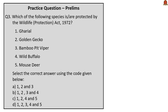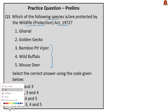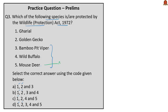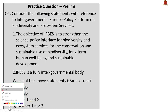Question 3: Which of the following species are protected by the Wildlife Protection Act of 1972? 1. Gharial 2. Golden Gecko 3. Bamboo Pit Viper 4. Wild Buffalo 5. Mouse Deer. Using the elimination technique: since 1 and 2 appear in all options, we need to check items 3, 4 and 5. Mouse Deer is protected under the Wildlife Protection Act of 1972. The Bamboo Pit Viper is not classified or protected under the Wildlife Protection Act. Therefore, the correct answer is option C: 1, 2, 4 and 5.